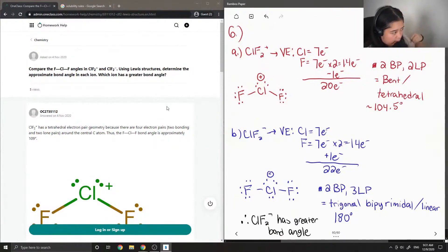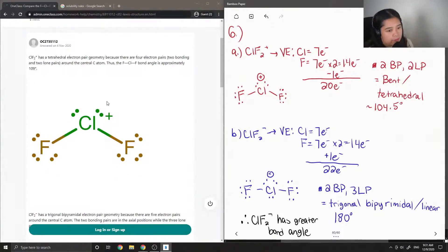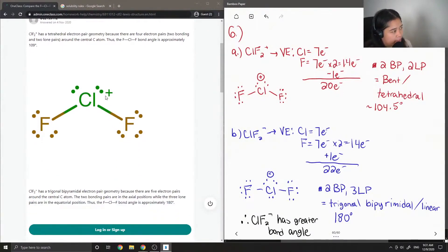So let's see what the junior tutor said. ClF2+ has a tetrahedral electron pair geometry because there are four electron pairs, two bonding and two lone pairs, around the central chlorine atom. Thus, the fluorine-chlorine-fluorine bond angle is approximately 109 degrees. I got around 104.5, but I guess it depends on which chart you use.